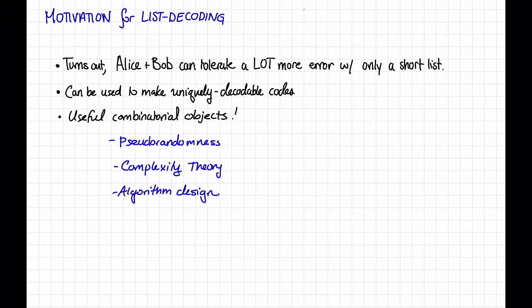First, as we will see later, it turns out that Alice and Bob can tolerate a lot more error if Bob is only supposed to return a short list. In some cases, they'll be able to tolerate up to twice as much error at the cost of Bob having to return a constant-sized list. That's pretty useful in the unique decoding context. For example, maybe Bob has some side information to help him narrow the list down, or perhaps, especially under some cryptographic assumptions or something like that, Alice could send him that side information encoded as part of the code word.